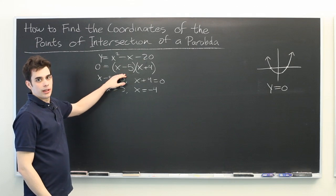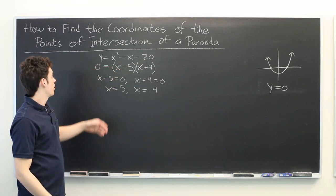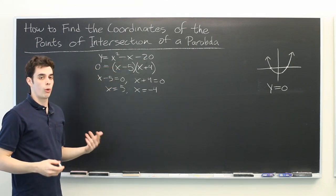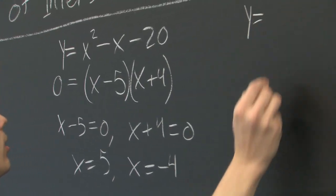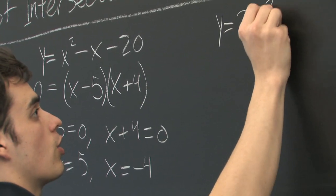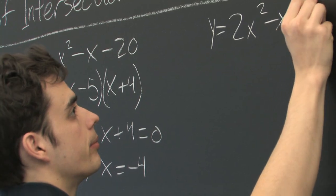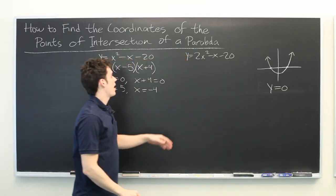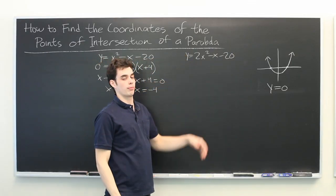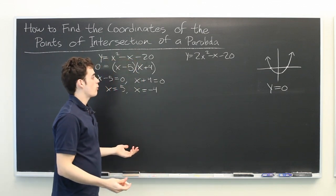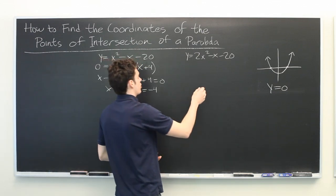But you won't always be this lucky. Sometimes you'll be given a parabola whose equation won't factor. Even a simple modification such as changing one coefficient can make that happen. So now we have y equals 2x squared minus x minus 20. So how do we find the x coordinates of the points of intersection?